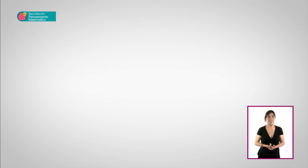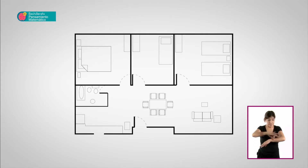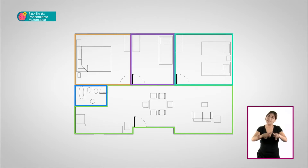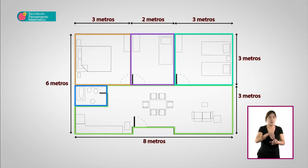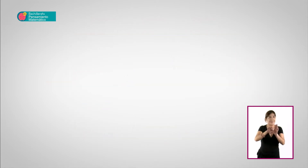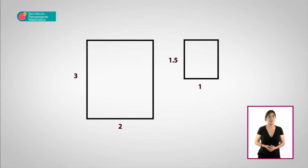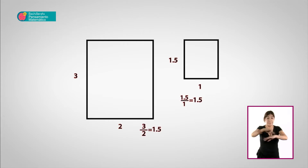Cuando estamos calculando las medidas reales en un plano, nos encontramos con medidas de superficie: patios, pisos, etc. En estos casos, no podemos solamente calcular uno de los lados; tenemos que hacer el cálculo de todos. ¿Cómo podemos saber si estas operaciones son las correctas? Usando la proporción. Si tenemos dos rectángulos de distinta medida, al dividir el largo entre la altura, cuando el resultado es el mismo, estas dos figuras son semejantes.